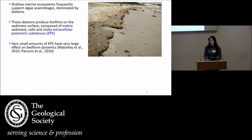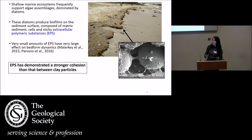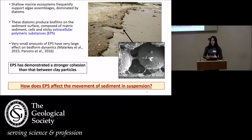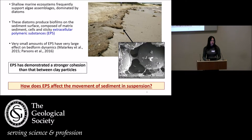There's been a lot of talk about EPS and biofilms in this meeting so far, but the key point relevant to my research is that EPS has been observed as binding to sediment grains, stabilising beds, and increasing erosion thresholds. So the question I'm trying to answer is: how can EPS affect the movement of particles in suspension?